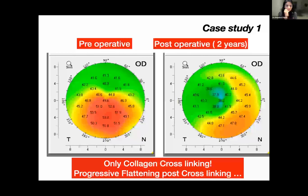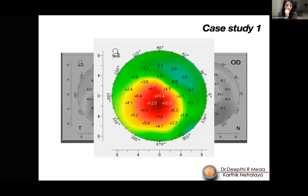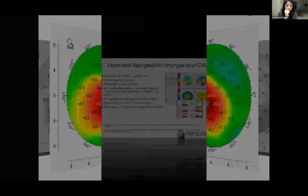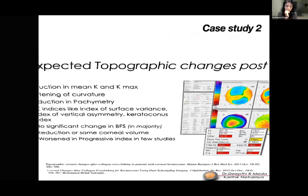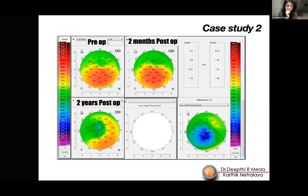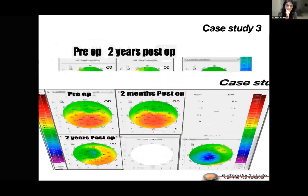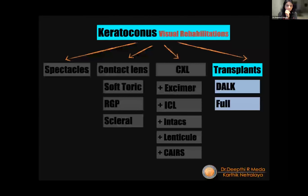Excessive and progressive flattening post-cross-linking adds a huge refractive benefit — in this series, flattening of almost 12 diopters was seen post-conventional cross-linking. One patient showed little flattening at 2 months but close to 10 diopters of flattening at 2 years. Another patient showed smoothing almost resembling a topo-guided treatment, but this was just cross-linking. Most of these cases involved true flattening, not scar-related changes, providing a huge refractive advantage.